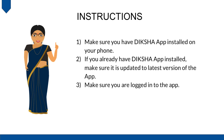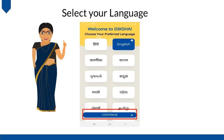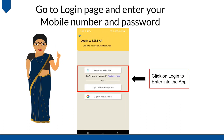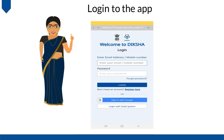Step 3: Make sure you are logged into the app. Select your language. Click on Head Teachers and Officials. Go to the login page and enter your mobile number and password, then login to the app.